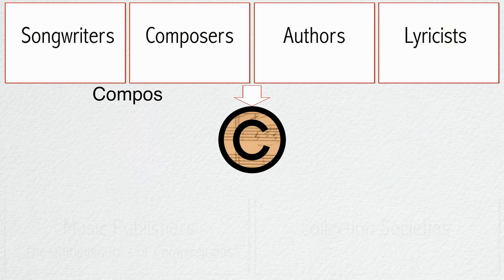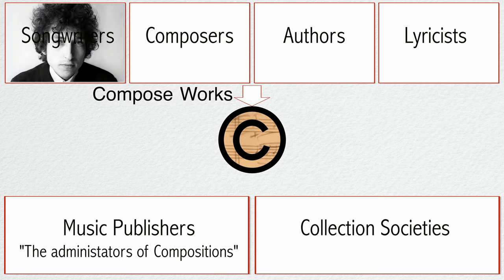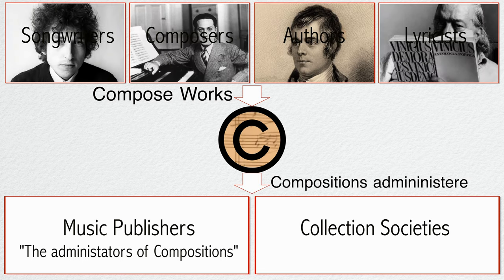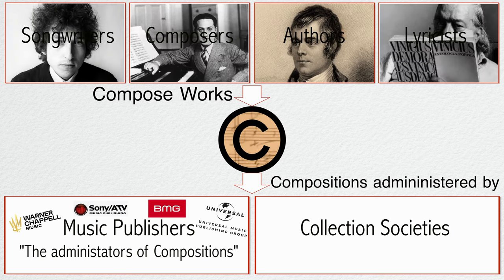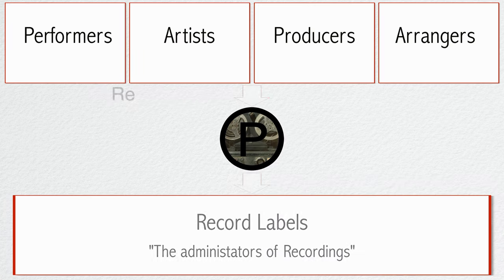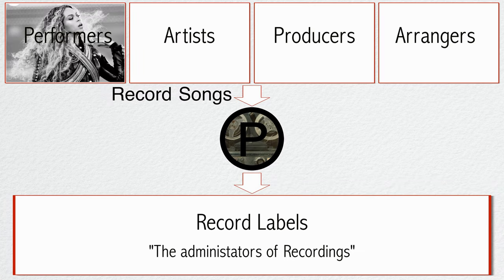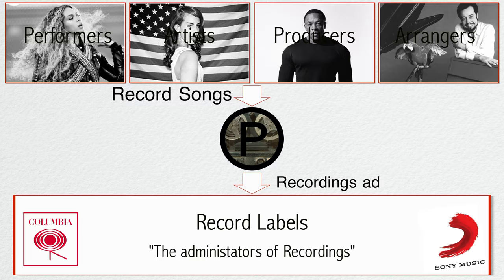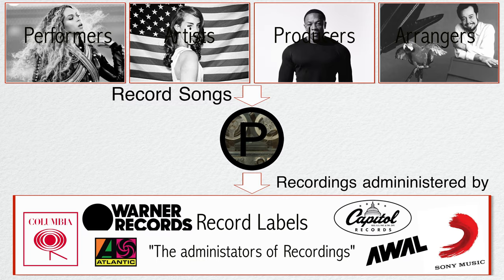Usually these rights are created and administered by different professionals and entities. Copyrighted compositions are usually created by writers, composers, authors, and lyricists, and are administered by music publishers and collection societies. Recordings are mostly created by performers, artists, producers, and arrangers, and are administered by labels.